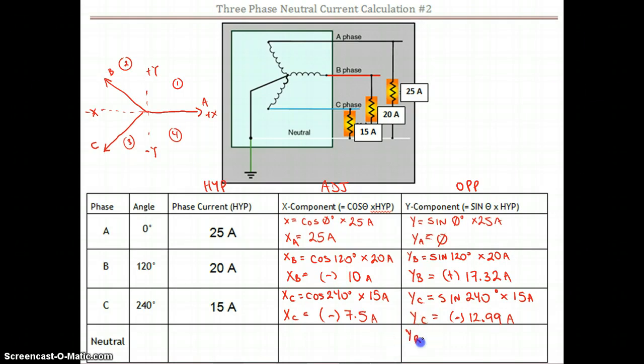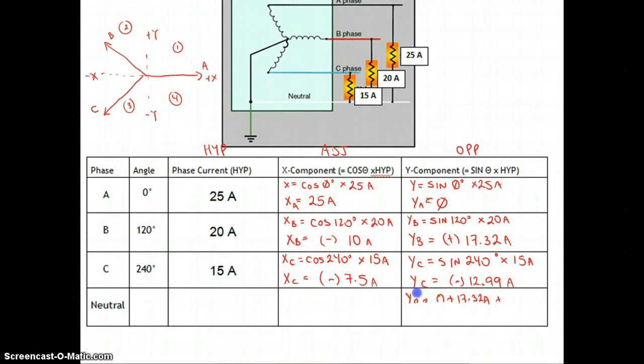So let's start here for the y for the resultant. So we've got 0 plus 17.32 amps plus, we're adding it, but we're going to take off the, let me just scroll down here, I guess. It gets all funky when I'm near the bottom of the screen here. Okay, let's try that again. So the y of the resultant is equal to 0 plus 17.32 plus negative 12.99. So we're adding all those vectors up together. So essentially we get 17.32 minus the 12.99, and that gives us positive 4.33.